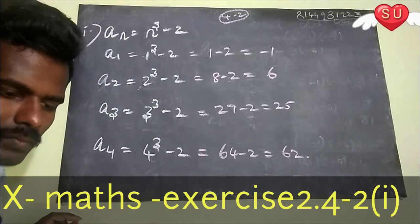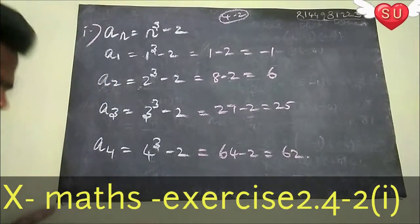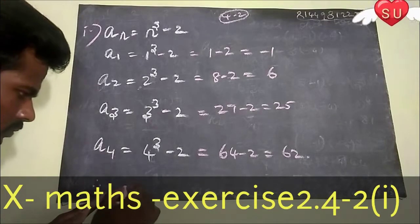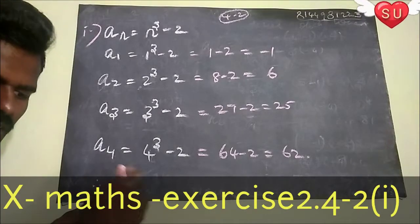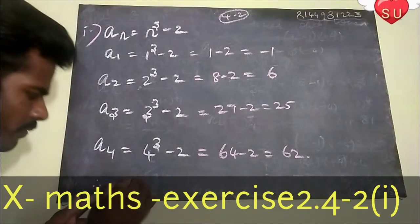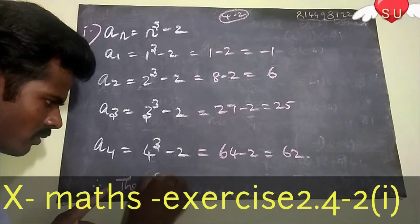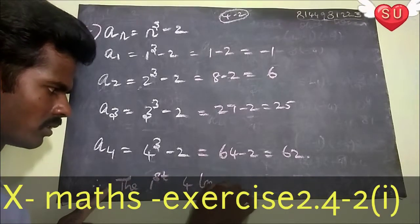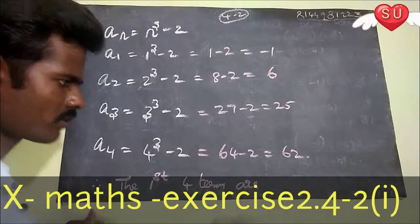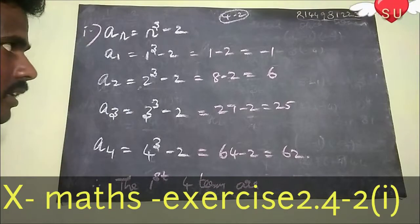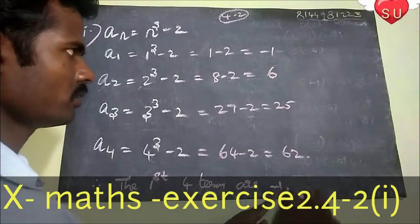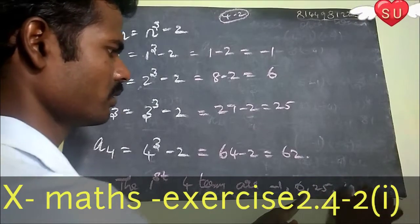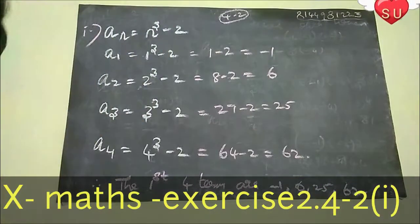So the first four terms are: minus 1, 6, 25, and 62.